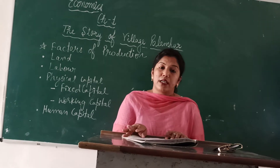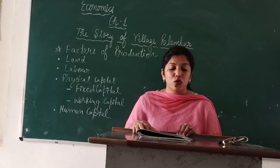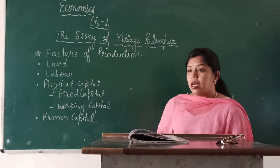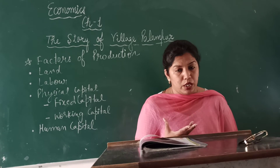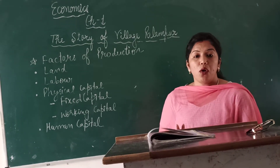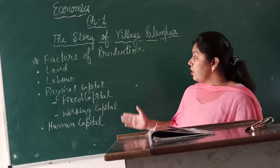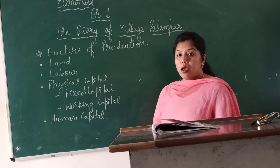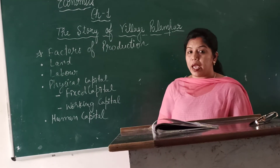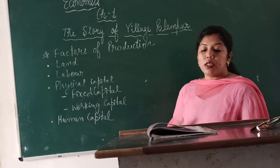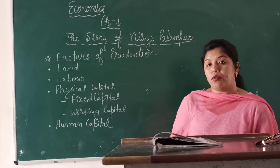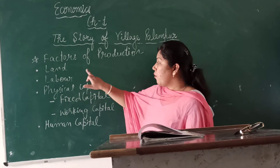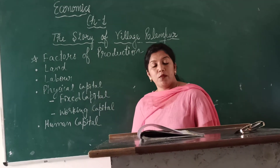Now we will discuss the factors of production. For any kind of production, we need 4 factors. The first requirement is land — land which is a natural resource — and other resources such as water, forest, and minerals are also natural resources. But the first and most important requirement is land.